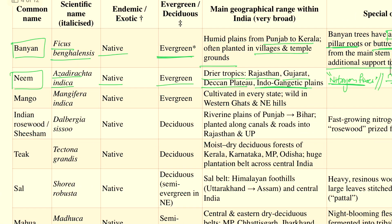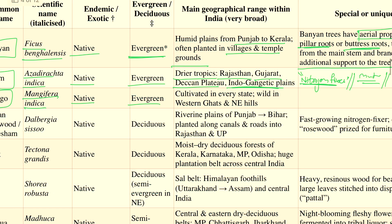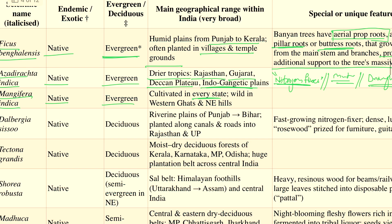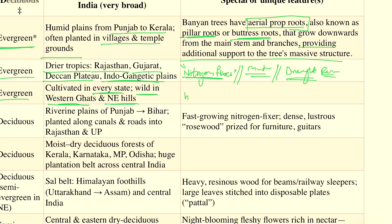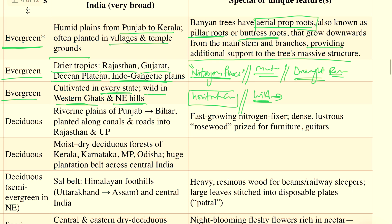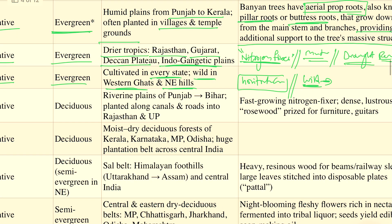Going to Mango, its scientific name is Mangifera indica. It is a native, evergreen species, almost cultivated in every state. There is also a wild variety present in the Western Ghats and North-Eastern hills. So mango, on one side, is an agricultural crop grown in plantations, and at the same time, it also has a wild variety that grows in forests of the Western Ghats and North-Eastern hills.